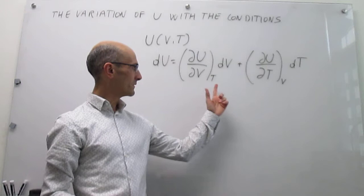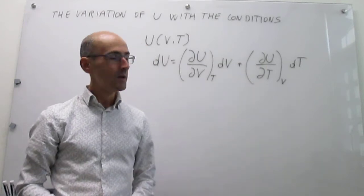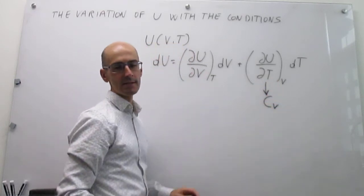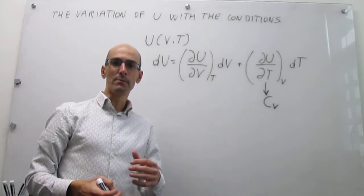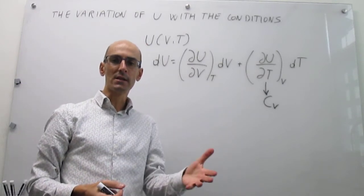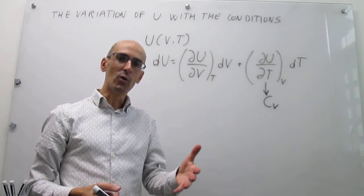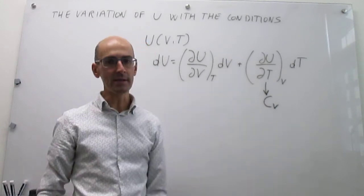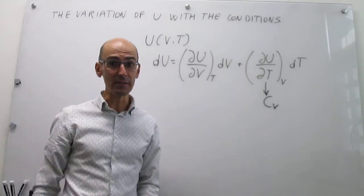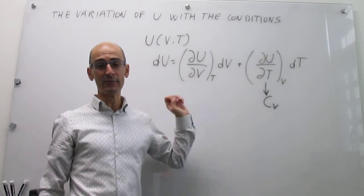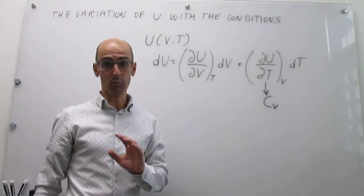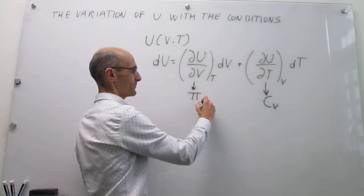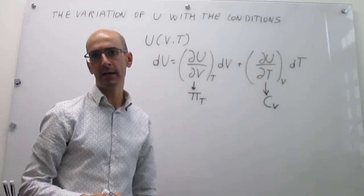The question is: what are these coefficients? One of them is something we have studied already — that's the heat capacity at constant volume, C_V, which is simply a measure of the sensitivity of a substance to change its temperature when some energy is transferred as heat to that sample. Something that is new is this variation of the internal energy with volume, which we have not studied. We call this the internal pressure, and we're going to denote it as π_T.